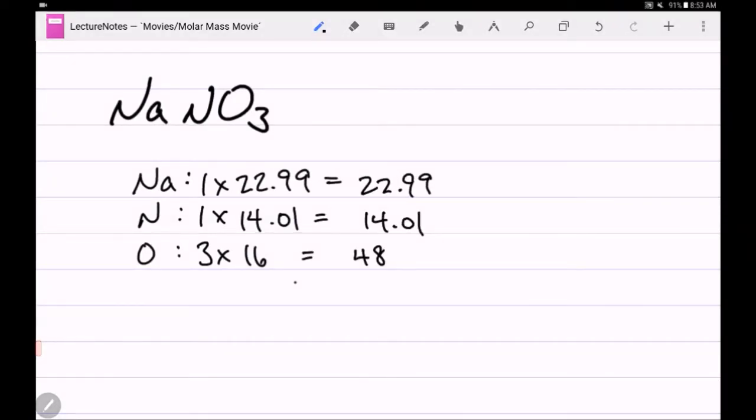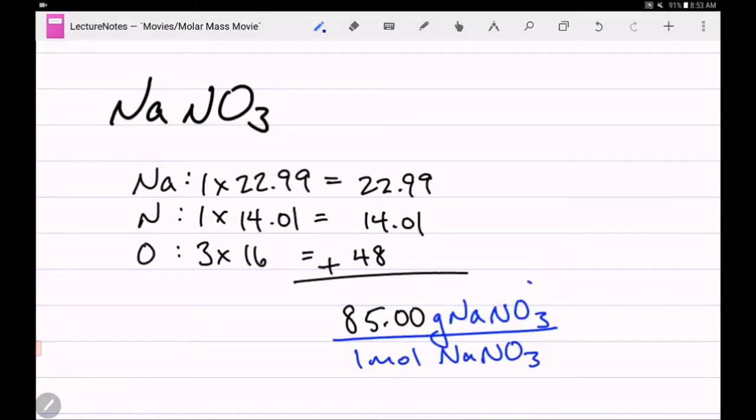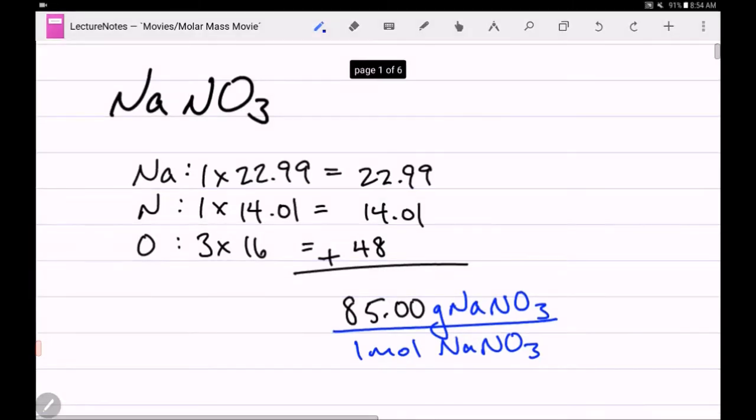Now if we multiply those together and then add that all up, we'll get the molar mass for sodium sulfate. The important thing about molar mass is the number. The number is important, but more important than the number is the units. So we want to take the molar mass and we want to stamp it with the units. So whenever you write down a molar mass, whenever you grab a molar mass from the periodic table, you always want to stamp it with the units, grams of the molecule for every one mole of the molecule. So the molar mass for this is 85 grams of sodium nitrate for every one mole of sodium nitrate. That's going to be really important when we go to use the molar mass later on in calculations.